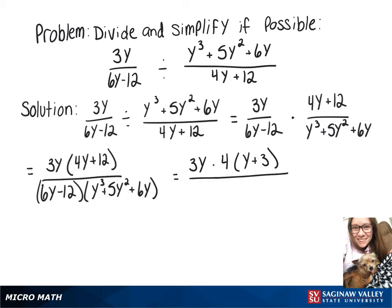On the bottom, with 6y minus 12, we can factor out a 6, and that'll leave y minus 2. And in that second set of parentheses, we can factor out a y, leaving y squared plus 5y plus 6.